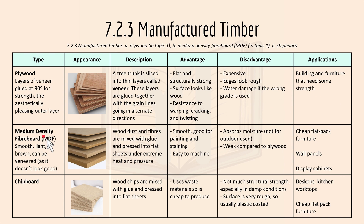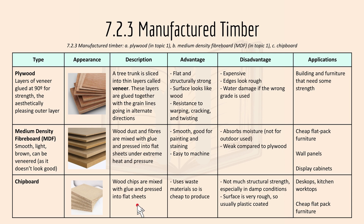MDF, or medium density fibreboard, is smooth, light, and brown. Wood dust and fibres are mixed with glue and pressed into flat sheets under extreme heat and pressure. It's smooth and good for painting and staining, but it absorbs moisture and is weak compared to plywood. Applications include cheap flat-pack furniture and wall panels. Chipboard is made when wood chips are mixed with glue and pressed into flat sheets, similar to MDF. It uses waste material so it's cheap to produce, but has little structural strength, especially in damp conditions. It's used in desktops, kitchens, and workshops.